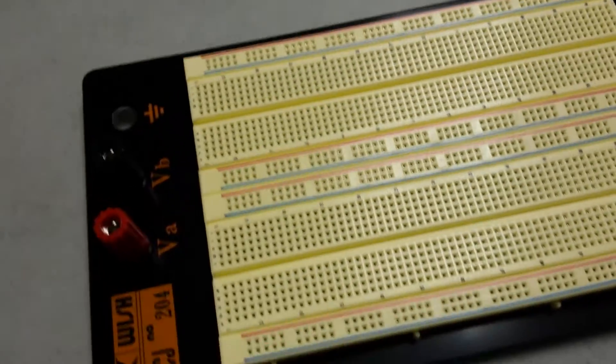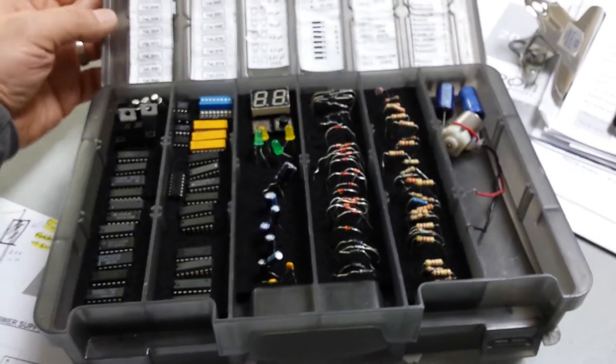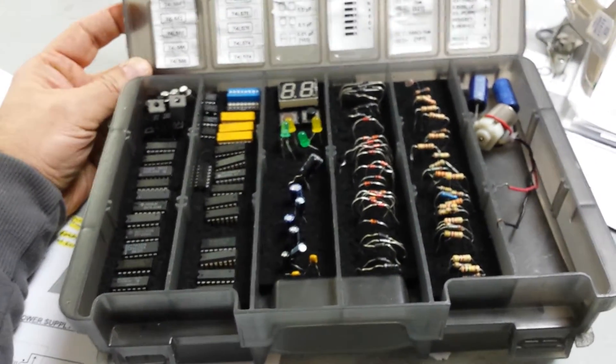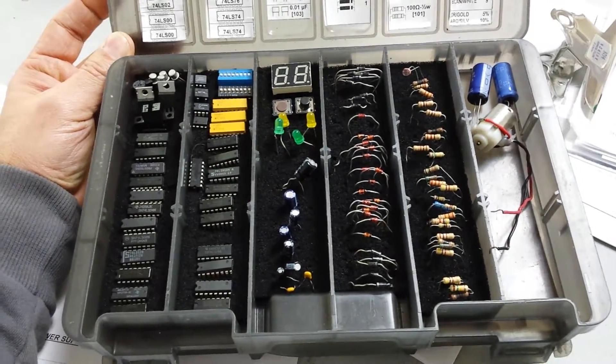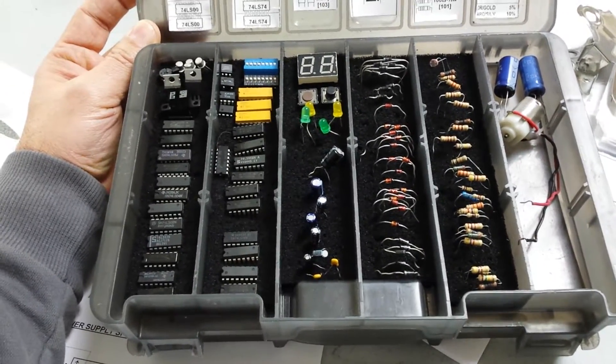So we'll be using a breadboard for this, and from your kit you're going to get all the semiconductors necessary. Your kit should look like this at all times, nicely organized so that you know exactly where everything is.